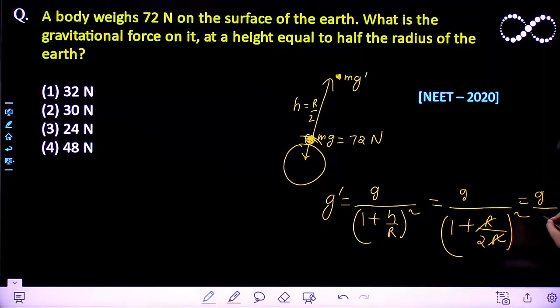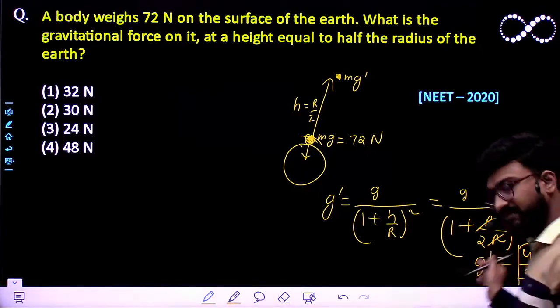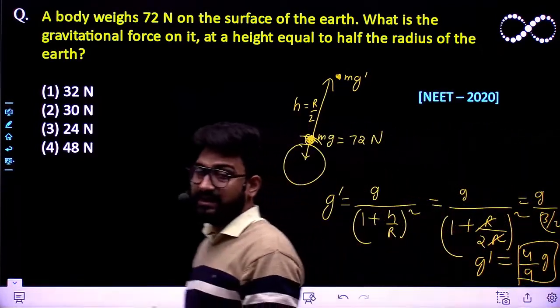So g by 3 by 2 whole square. This must be equal to 4 by 9 times of g. So the acceleration due to gravity at that particular point is 4 by 9 times of g.